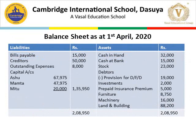After preparing partners capital account, the balance sheet of the firm is prepared as at 1st April 2020. On liability side: bills payable 15,000; creditors 50,000; outstanding expenses 8,000; partners capitals — Ashu 67,975, Mamata 47,975, Meetu 20,000, total capitals 1,35,950. On asset side: cash in hand 32,000; cash at bank 15,000; stock 23,000; debtors 20,000 minus provision 1,000 = 19,000; investment 2,000; prepaid insurance premium 5,000; furniture 8,750; machinery 16,000; land and building 88,200.